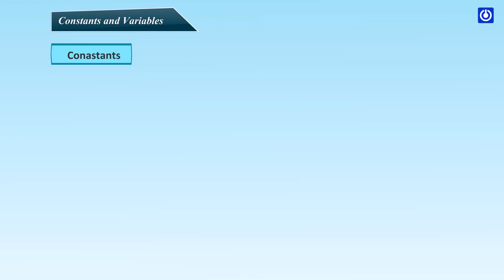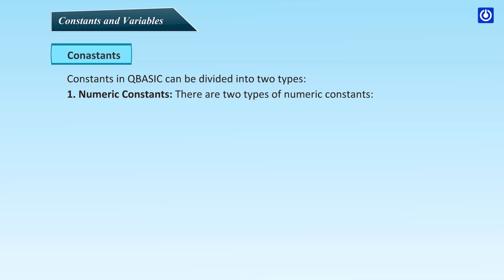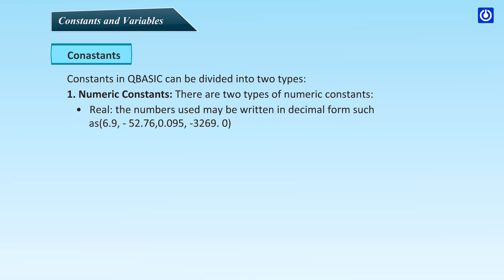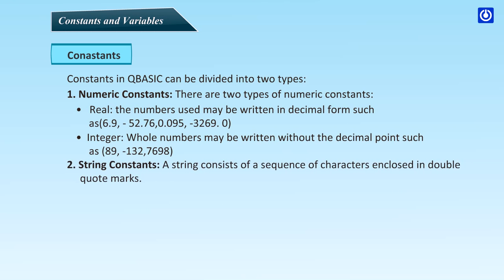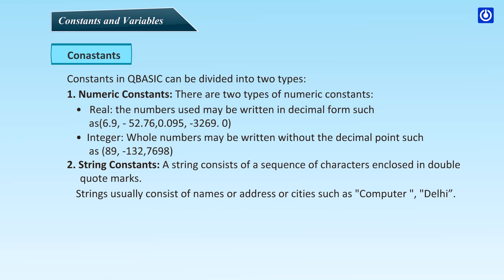Constants: constants in QBasic can be divided into two types — numeric constants and string constants. Numeric constants: there are two types — real and integer. Real numbers may be written in decimal form, such as 6.9, -52.76, 0.095, -3269.0. Integer constants are whole numbers written without the decimal point, such as 89, -132, 7698. String constants: a string consists of a sequence of characters enclosed in double quote marks. Strings usually consist of names, addresses, or cities, such as "computer" or "Delhi".